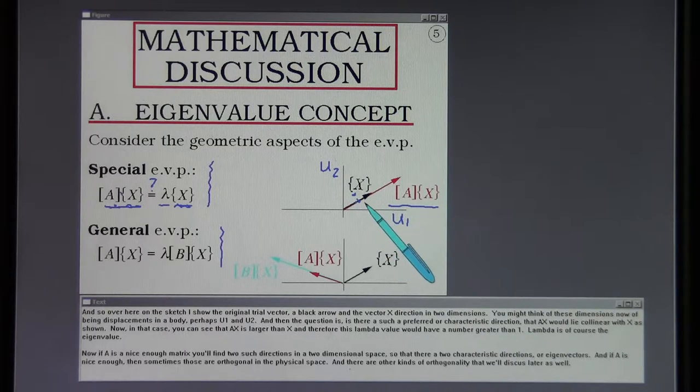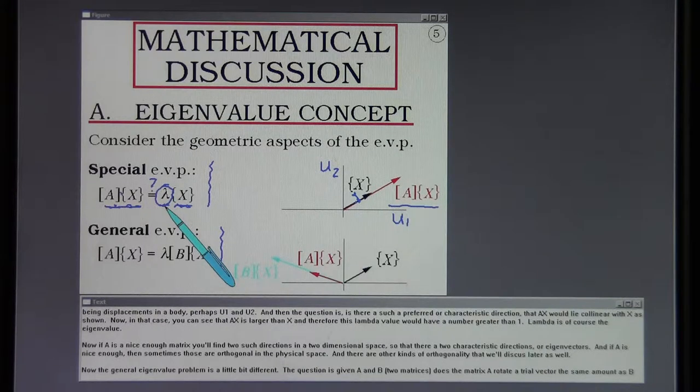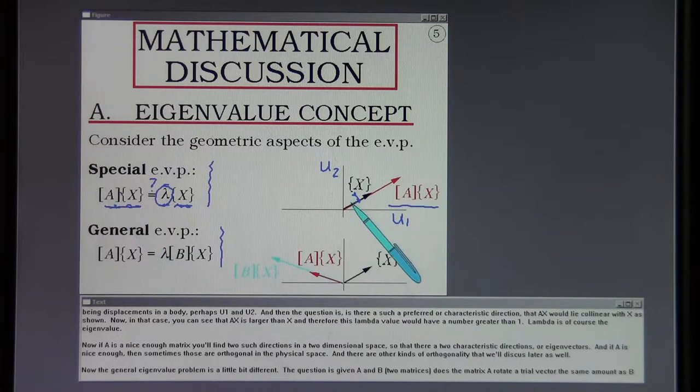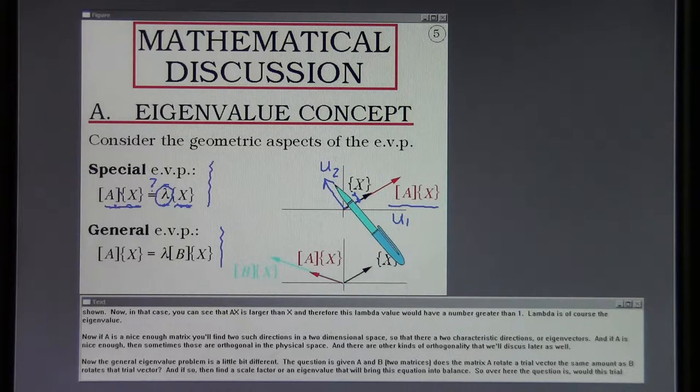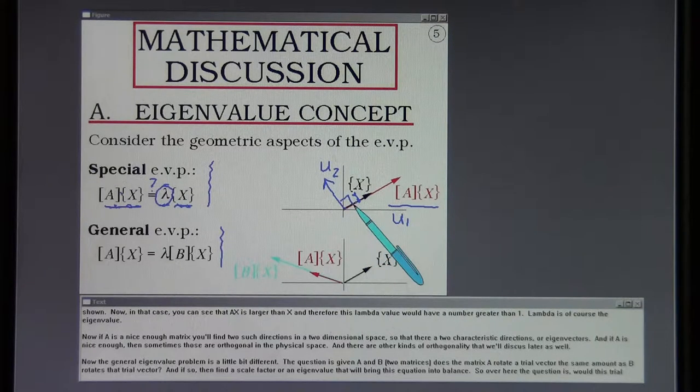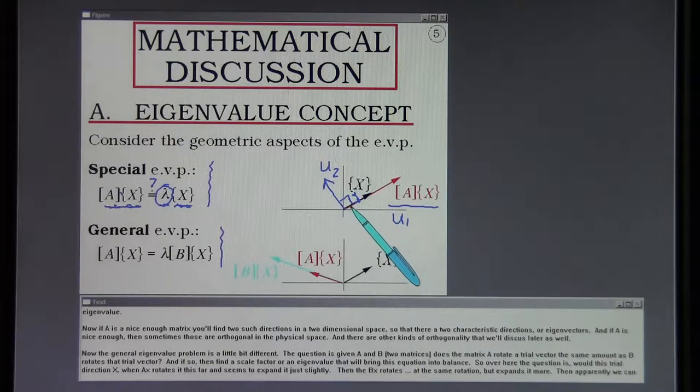You might think of these dimensions as being displacements in a body, perhaps u1 and u2. And then the question is, is there such a preferred or characteristic direction that A x would lie collinear with x. In that case, you can see that A x is larger than x, and therefore this lambda value would have a number greater than one. Lambda is the eigenvalue. Now, if A is a nice enough matrix, you will find two such directions in a two-dimensional space, so that there are two characteristic directions or eigenvectors. And if A is nice enough, then sometimes those are orthogonal in the physical space.